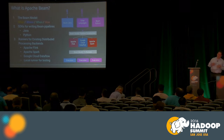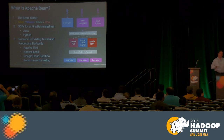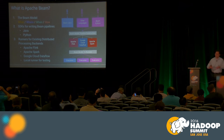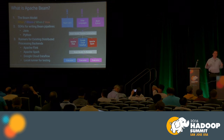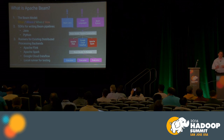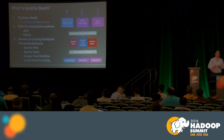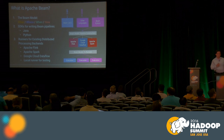Apache Beam consists of three things. The first is the Beam model — the programming model this talk is about. That model is implemented in a set of SDKs and runners. You use the SDK to define your data processing pipeline and then run it on a runner. Today we support Java SDK and Python SDK, and several runners: Apache Flink, Apache Spark, Google Cloud Dataflow, and a local runner for testing.